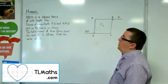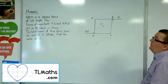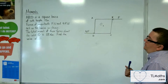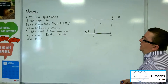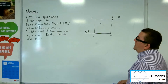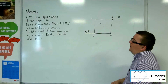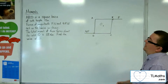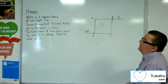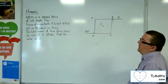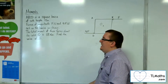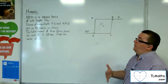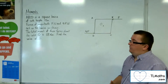In this problem we've got ABCD as a square lamina of side length 15 metres. Forces of magnitude F newtons and 4F newtons act on the lamina as shown. The total moment of these forces about the centre O is 18 newton metres. Find the value of F.